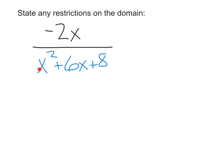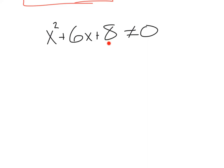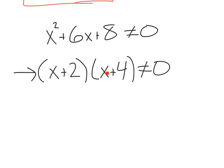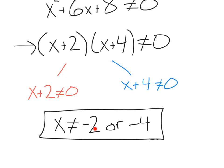If we run into a denominator that looks more complex, that doesn't matter — we treat it exactly the same way. Here the denominator X squared plus 6X plus 8 cannot equal 0. This is a quadratic, so we can try factoring: that gives us X plus 2 times X plus 4 cannot equal 0. From there, X plus 2 cannot equal 0 and X plus 4 cannot equal 0. Solving each, we get X cannot equal negative 2 or negative 4. These are our restrictions.